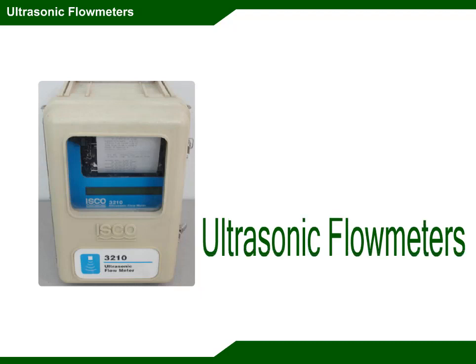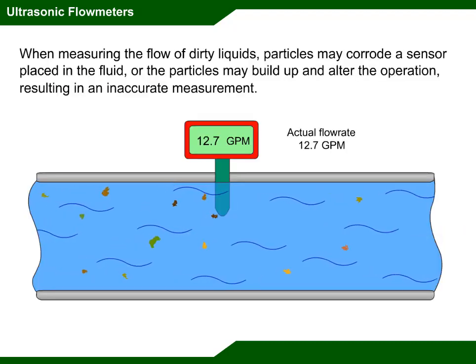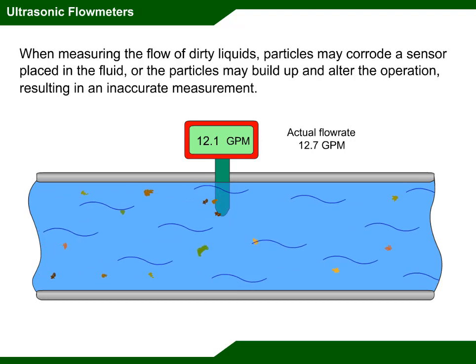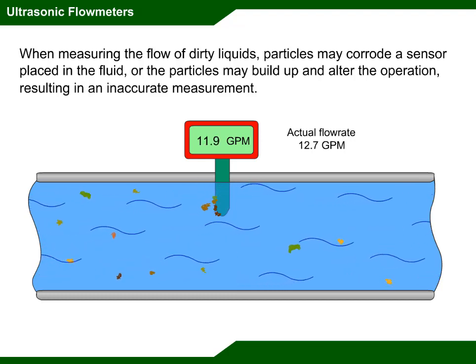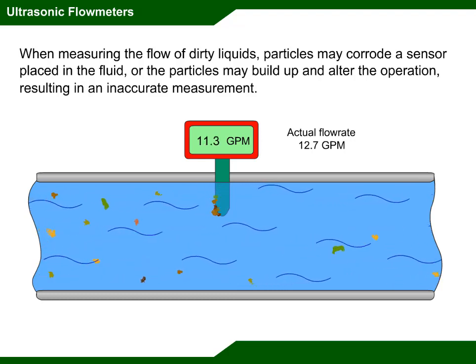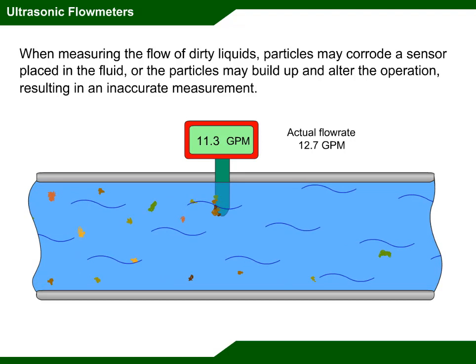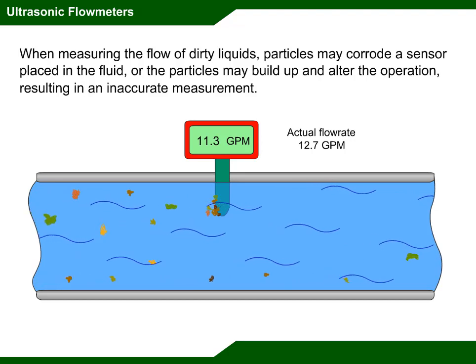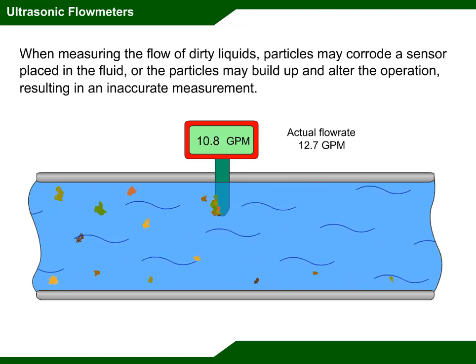Welcome to Ultrasonic Flow Meters. When measuring the flow of dirty liquids, particles may corrode a sensor placed in the fluid, or the particles may build up and alter the operation, resulting in an inaccurate measurement.